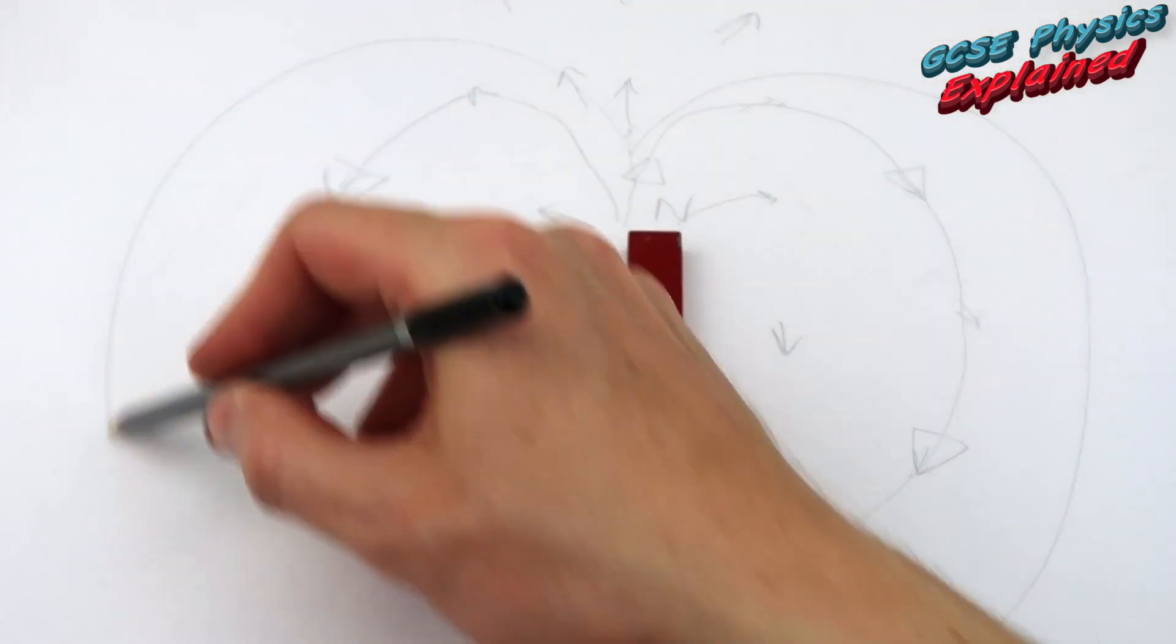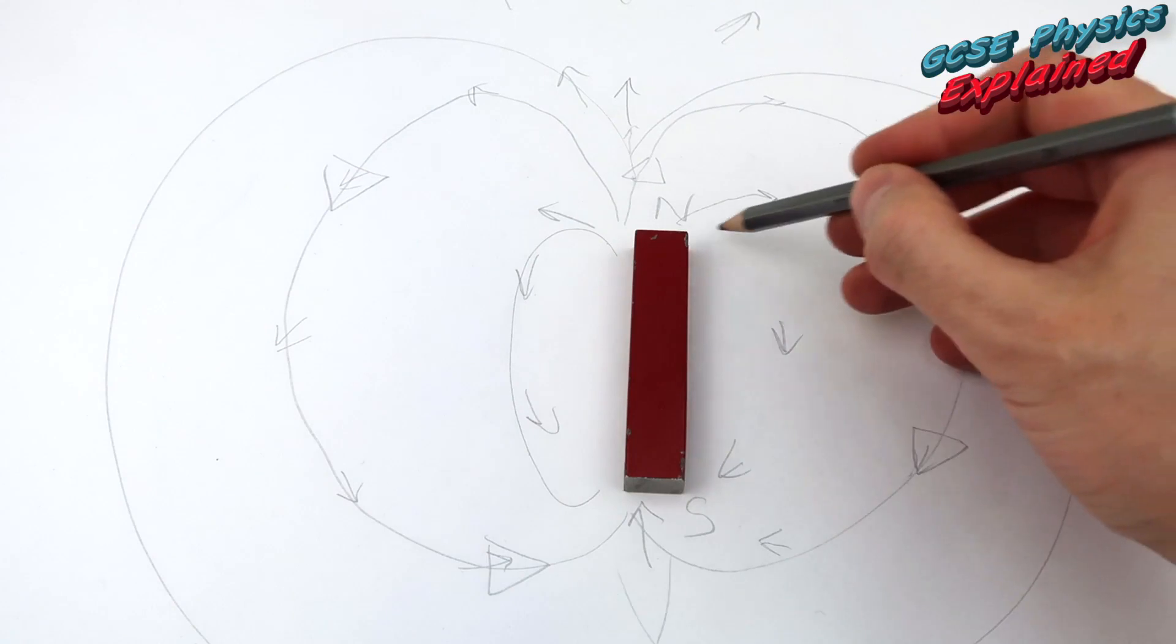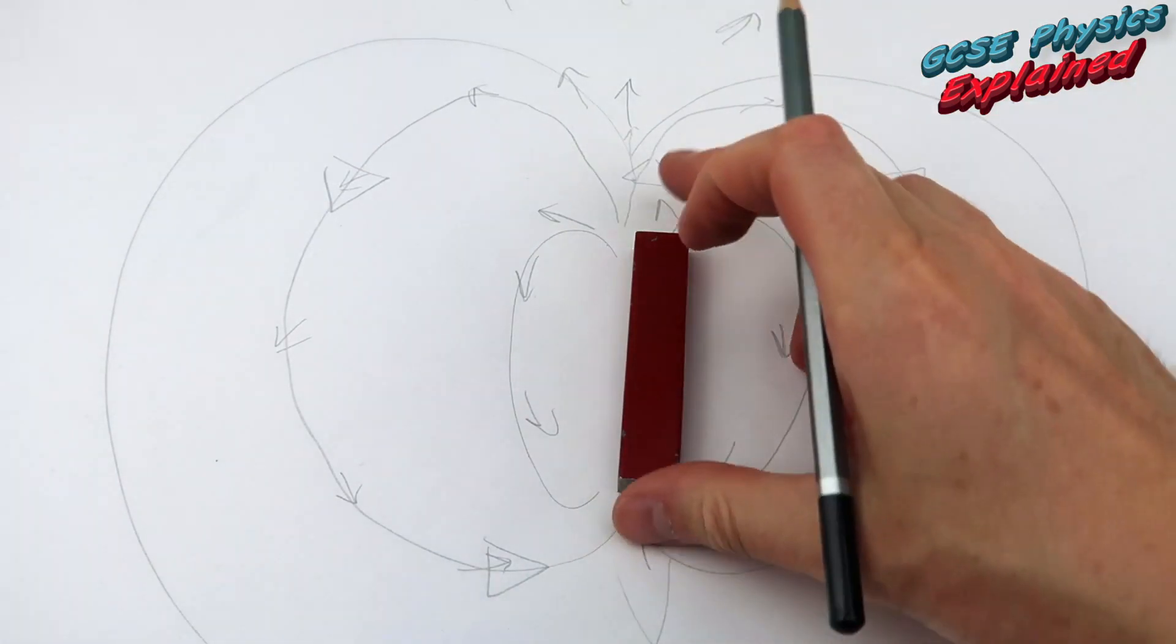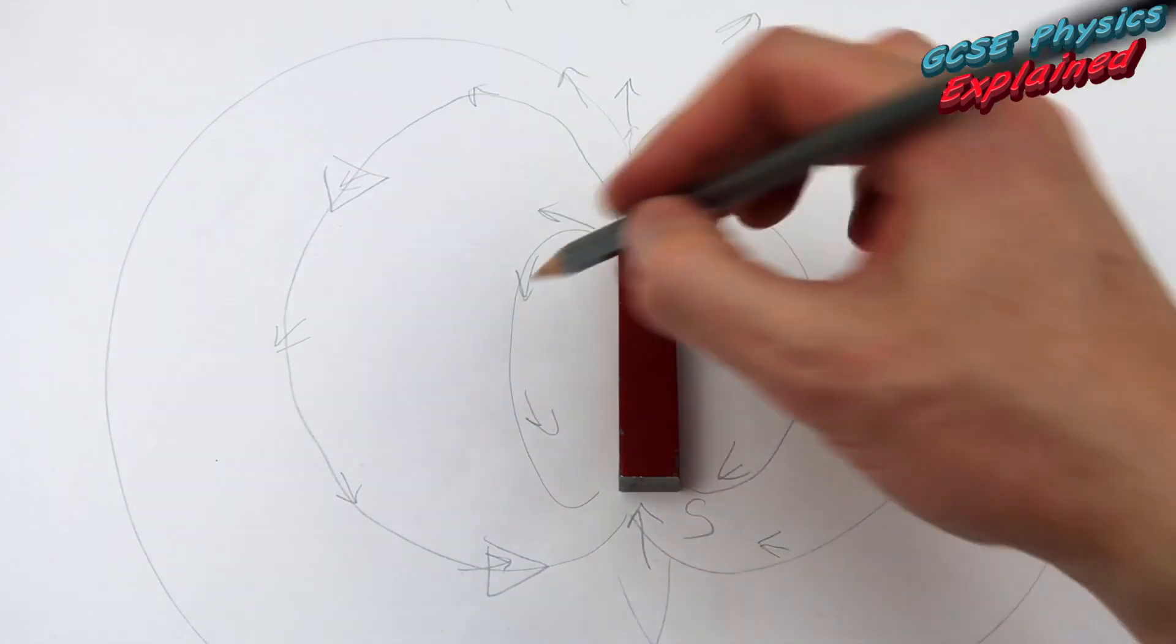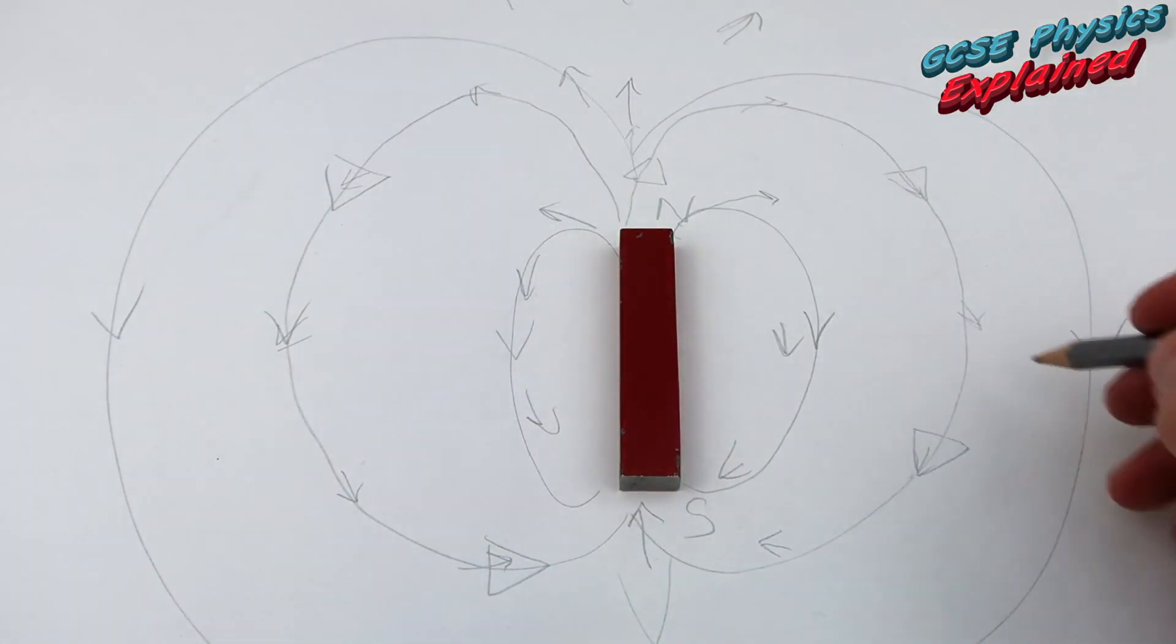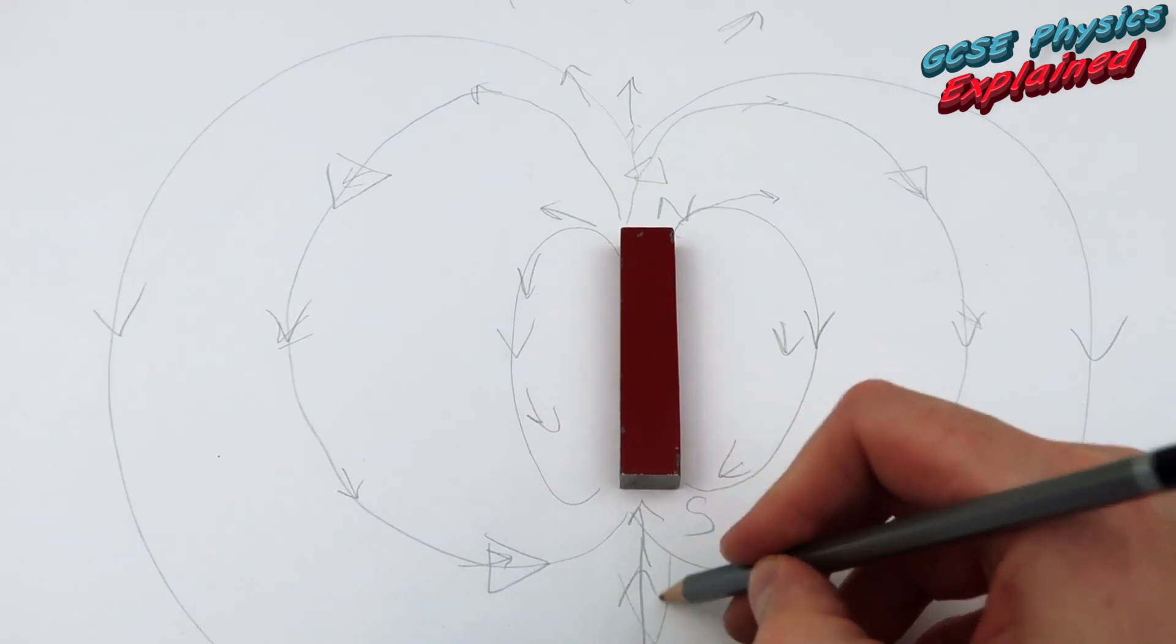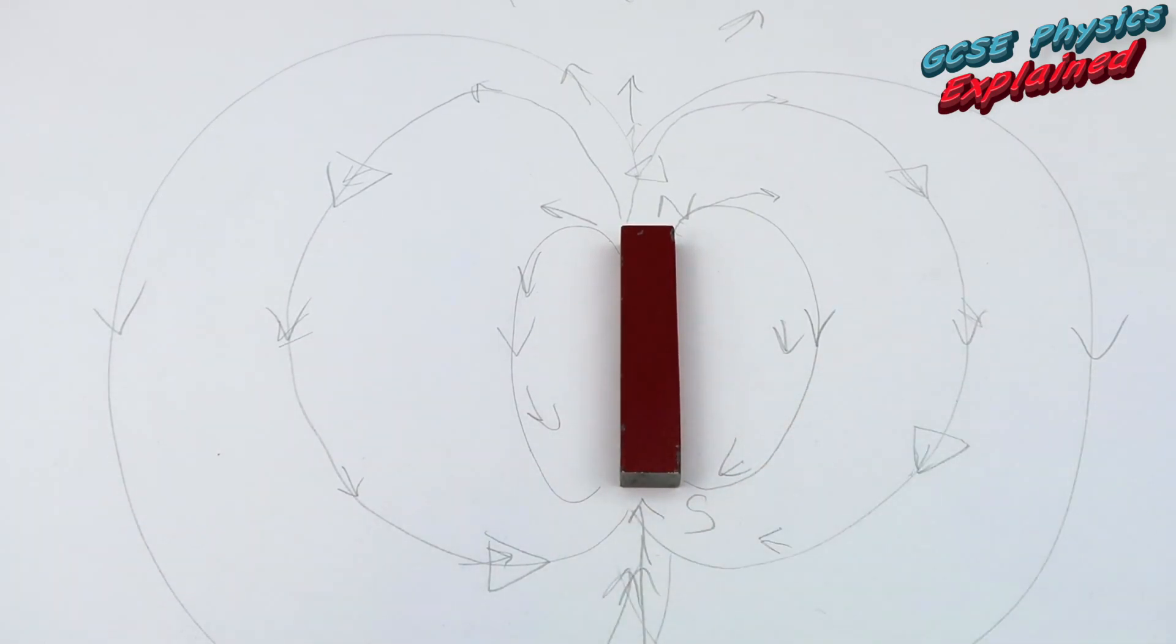And how close together these magnetic field lines are, that tells you where the magnet is the strongest. And that's why you need to know how to plot the magnetic field lines of a bar magnet.